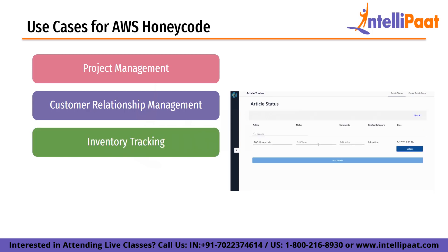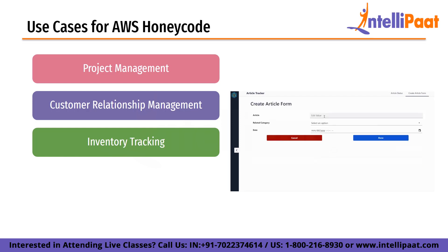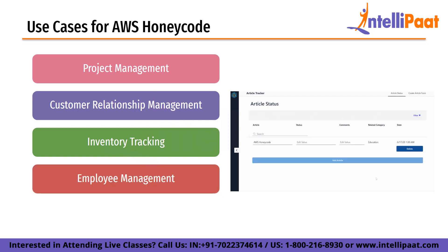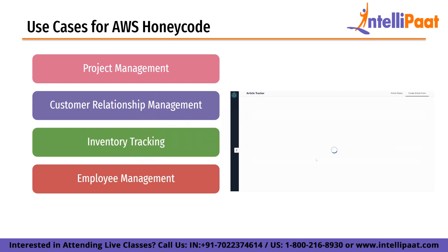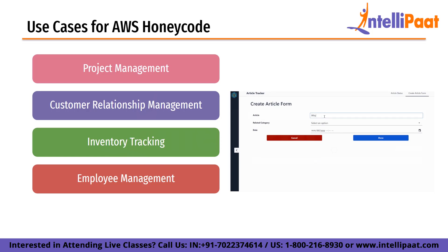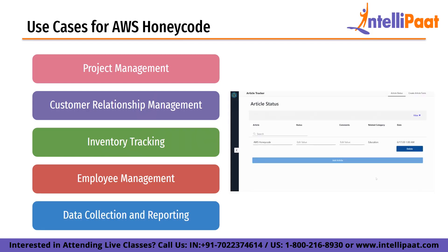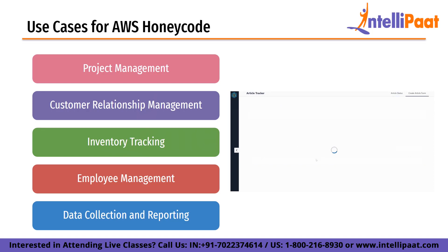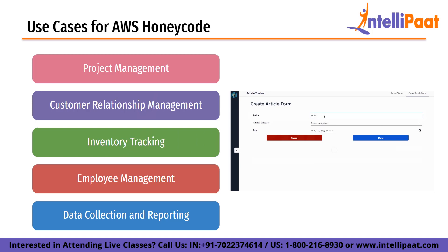Next on the list is inventory tracking. Honeycode can be used to create custom inventory tracking apps that monitor stock levels, track shipments, and manage purchase orders, helping businesses reduce stockouts or overstocks. Next is employee management. Honeycode can be used to build custom employee management apps that track employee schedules, attendance, and performance. And finally, data collection and reporting — Honeycode can be used to create custom apps that gather data from multiple sources and generate reports to help businesses make data-driven decisions.